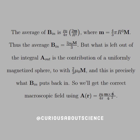That's just a direct substitution with the volume of a sphere. But what is left out of the integral A_out — the vector potential — is the contribution of a uniformly magnetized sphere, to wit 2/3 mu_naught M. And this is precisely what B_in puts back in. So we'll get the correct macroscopic field using the vector potential formulation of mu_naught over 4pi times M cross script-R-hat over script-R squared. Well, that's convenient.